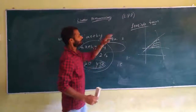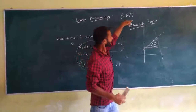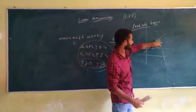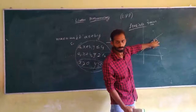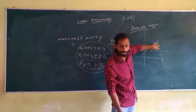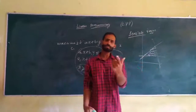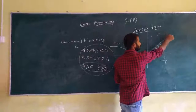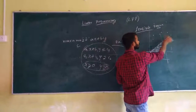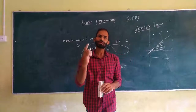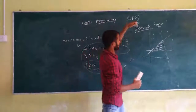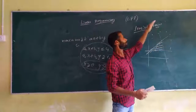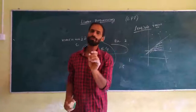Next, points outside the feasible region are called the infeasible region. Those points do not satisfy the constraints and are called infeasible solutions. A point outside the feasible region is called an infeasible solution.